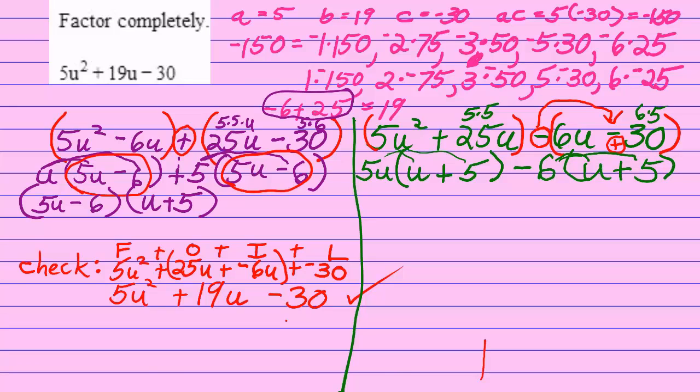Now looking at the entire polynomial, I have a u plus 5 and a u plus 5 and they match. So my answer is going to be, that is my factorization is going to be u plus 5 times the leftovers, 5u minus 6.